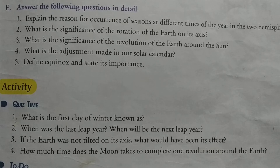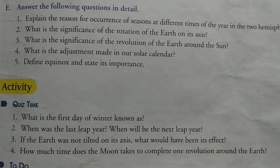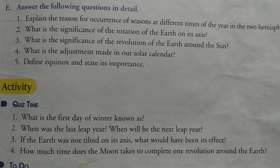First bullet: variation in the length of day and night. Full stop. Come to the next line, give another bullet: distribution of heat over the surface of the Earth. Full stop. Come to the next line, give next bullet: change of seasons on our planet. Full stop. This answer is finished.